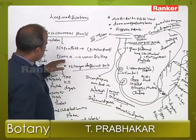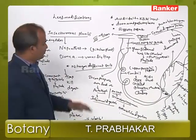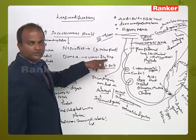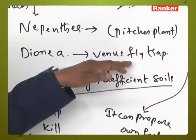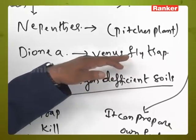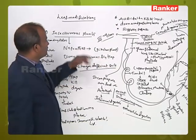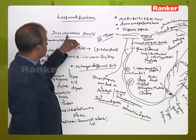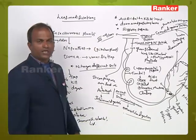When compared with Dionea, that is nothing but Venus flytrap, this is also called an insectivorous plant because it catches insects. This concludes the first leaf modification, that is, insectivorous plants.